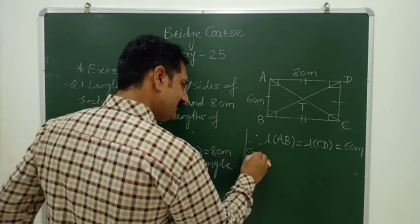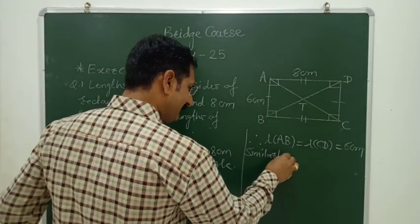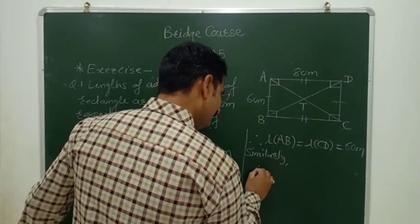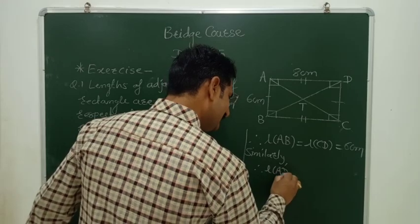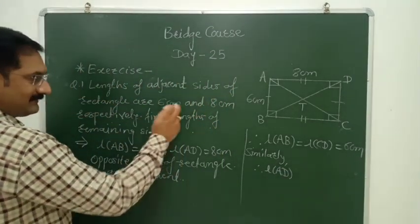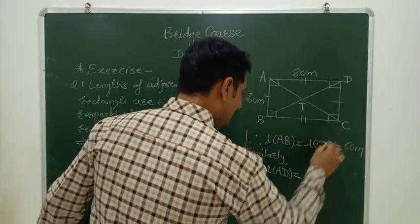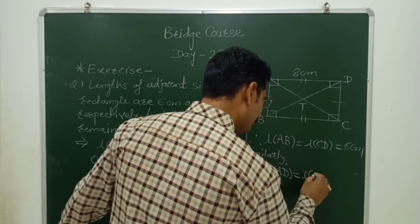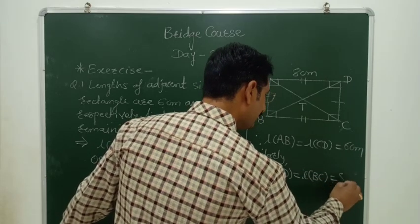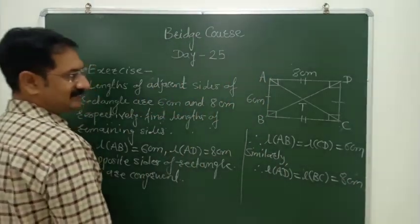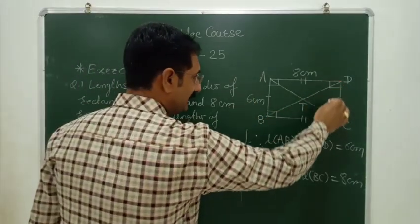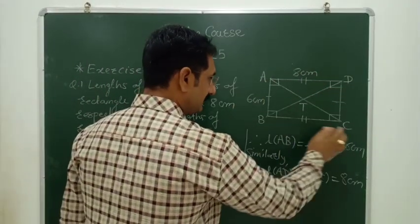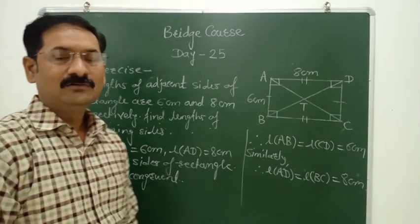Similarly, the opposite side is BC. Length of AD is equal to 8 cm. The other side, length of BC is equal to 8 cm. The length of AB is equal to length of CD, and the length of AD is equal to length of BC that is 8 cm.